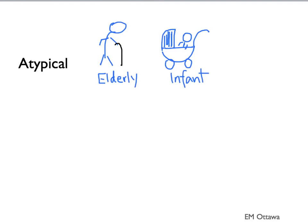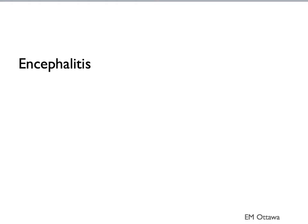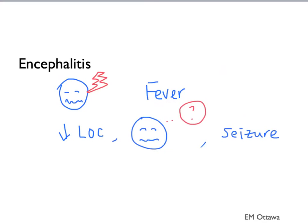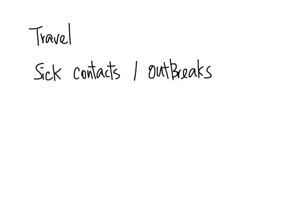Atypical symptoms can also occur, particularly in the elderly or infants. These two groups might only have lethargy or decreased level of consciousness without headache or neck pain. For encephalitis, the symptoms are quite similar — patients can complain of headache and fever, although neck pain is not as prominent since the meninges are not involved. They can also have decreased level of consciousness, confusion, or seizures. As with all infectious disease, it is important to ask about travel, sick contacts, and particularly if there is an outbreak in where they live.